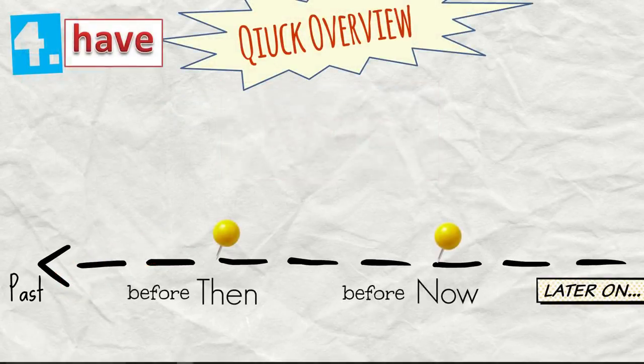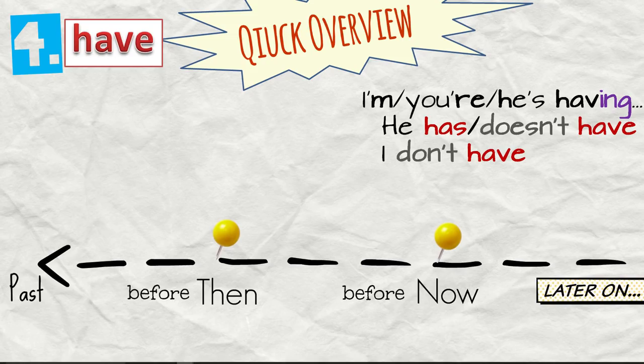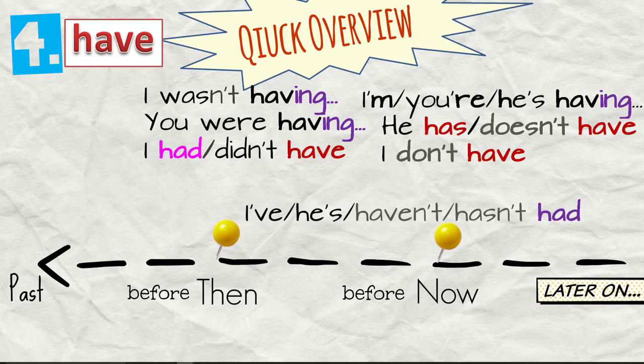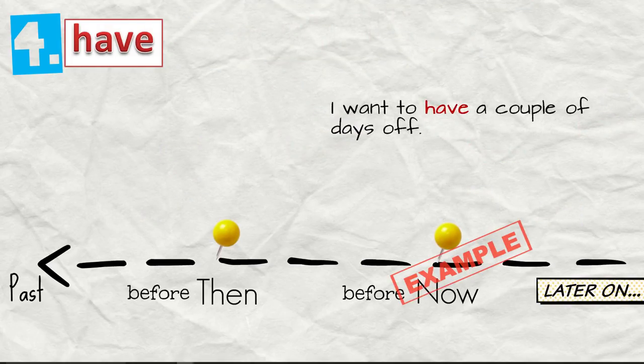Have. Quick overview. He has or he doesn't have, I have or I don't have, I'm having, you're having, he's having, I had or I didn't have, I wasn't having, you were having, I've had, he's had, or the negative I haven't had, he hasn't had. Then we have I've been having or he's been having, and I'd or I hadn't had, I'd been having.